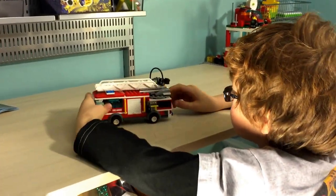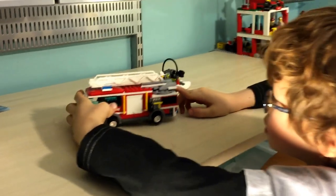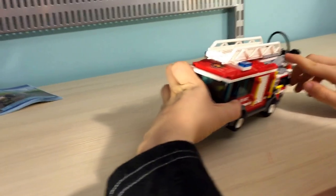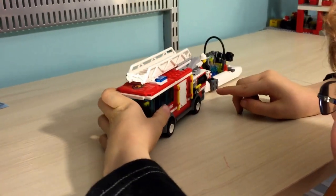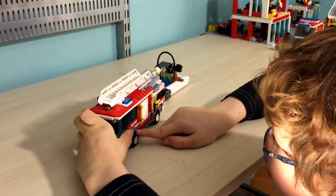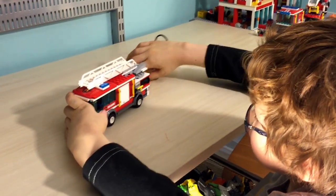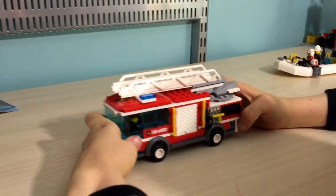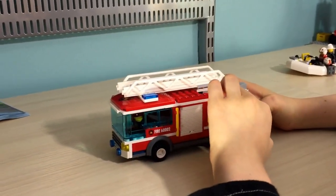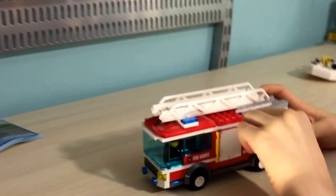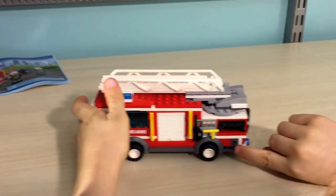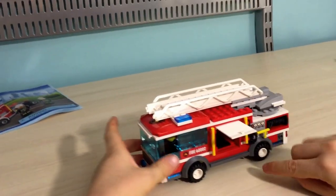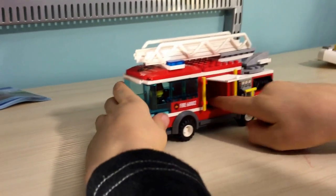This is set 60002, the fire truck. Since it's called fire truck, let's take a look at the truck. The hose is where you hook up. You can close and open that, and it's placed with a bucket.